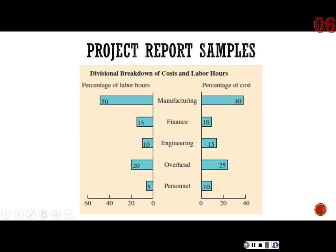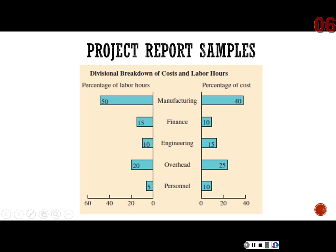Another look: how about let's look at it in terms of percentage of labor hours and percentage of cost for different functional areas — manufacturing, finance, engineering, overhead, and personnel. In this example, manufacturing is responsible for 50% of the project labor hours, but that 50% is only 40% of the cost of that particular project.